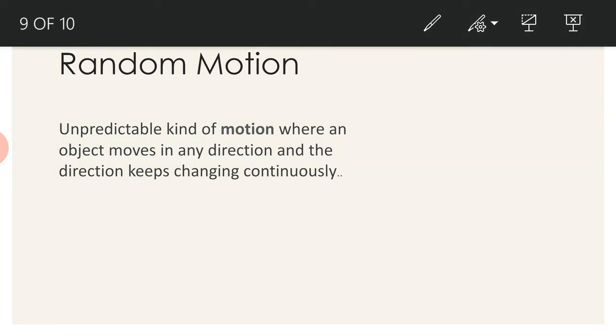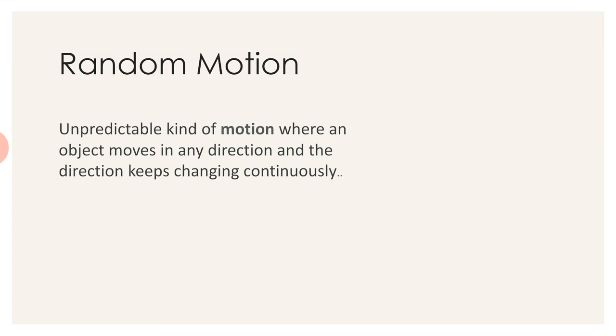Random motion is an unpredictable kind of motion where an object moves in any direction and the direction keeps changing continuously. For example, the gas molecules inside any container. In the surroundings, we know that matter is made up of various kinds of molecules and molecules are made of atoms.